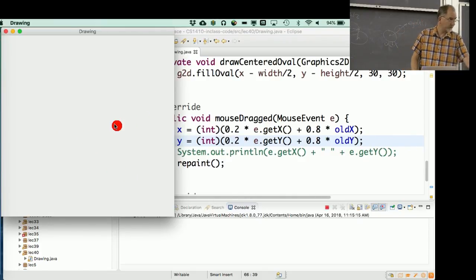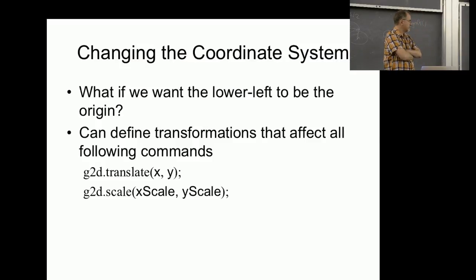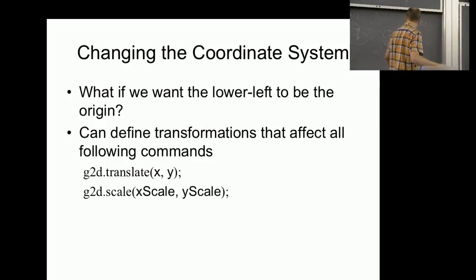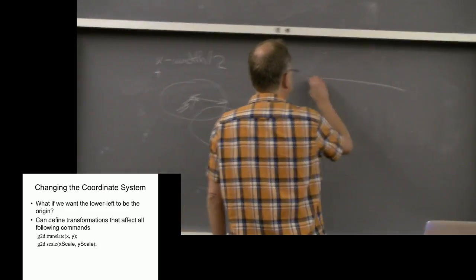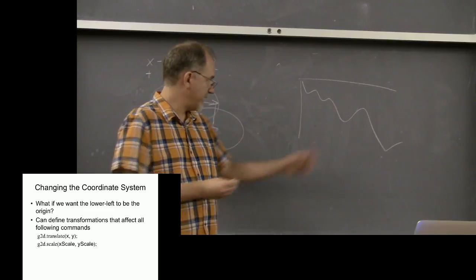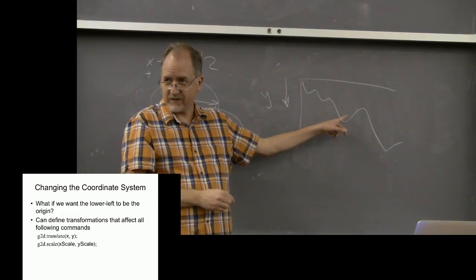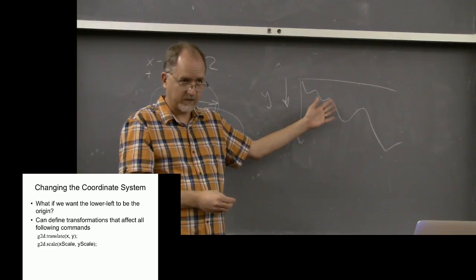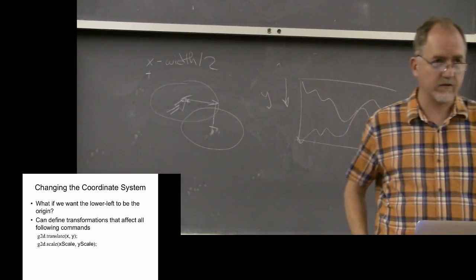There's still a problem: the coordinate system with origin at the upper-left is uncomfortable. If you were visualizing data — say, plotting company profits over time — a rising y value in swing draws downward on screen, so what looks like a falling chart is actually good news. We want charts to look natural so people can interpret them correctly. You can do this math by hand, or use the transformation tools built into Graphics2D.